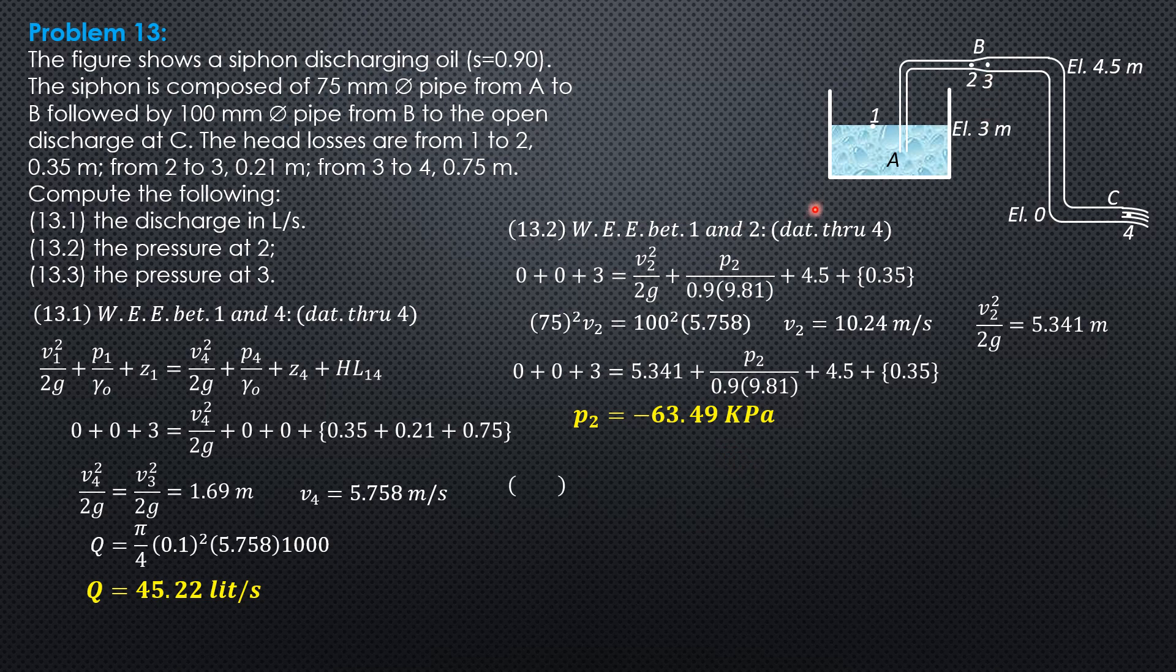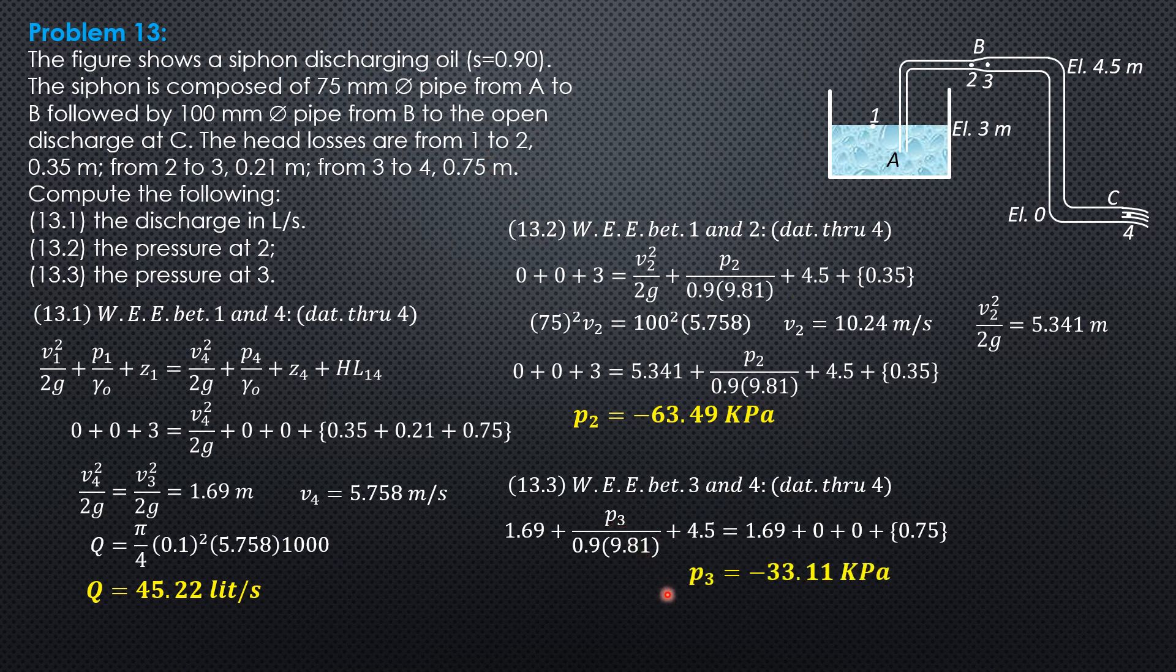For the pressure at 3, we write energy equation between 3 and 4. You can also write 1 to 2 or 2 to 3, but for convenience, 3 to 4. We have velocity head at 3, which is 1.69m, pressure head unknown (P3 over 0.9 times 9.81), elevation head 4.5 equals velocity head at 4, also 1.69m, pressure head 0, elevation head 0, head loss from 3 to 4 is 0.75m. Solving for P3, P3 is -33.1 kilopascals.